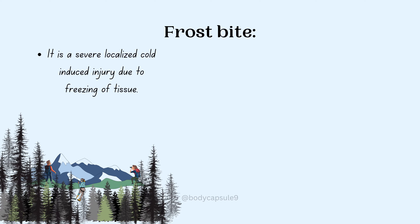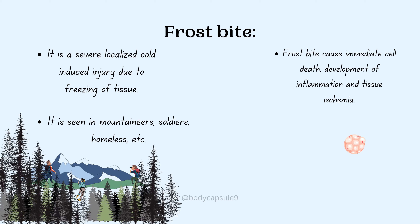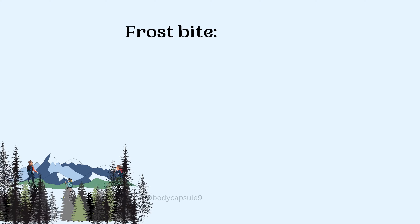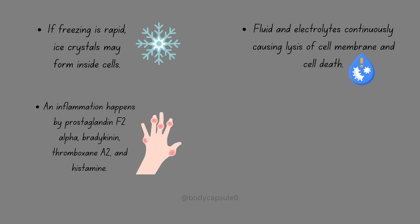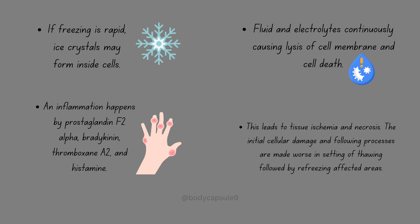Frostbite is a severe localized cold-induced injury due to freezing of tissue. It is seen in mountaineers, soldiers, the homeless, etc. Frostbite causes immediate cell death, development of inflammation, and tissue ischemia. If freezing is rapid, ice crystals may form inside cells. Fluid redistributes continuously, causing lysis of the cell membrane and cell death. Inflammation occurs via prostaglandin F2-alpha, bradykinin, thromboxane A2, and serotonin, leading to tissue ischemia and necrosis.